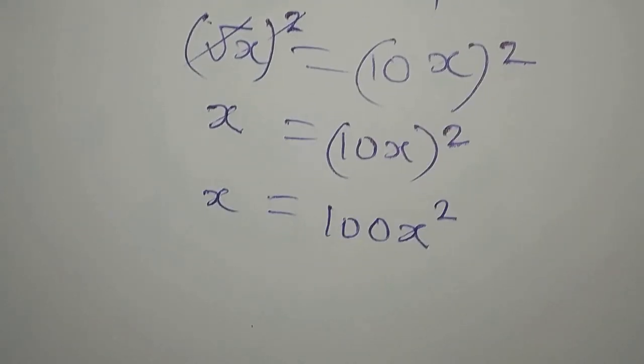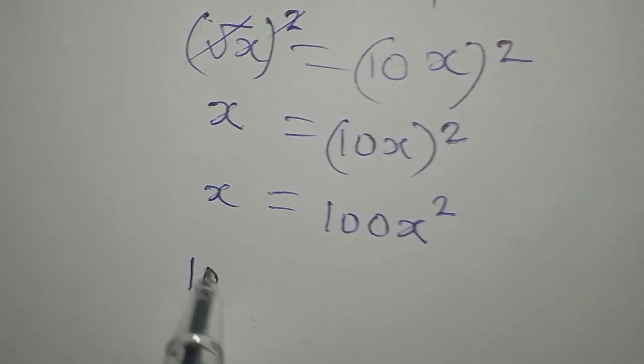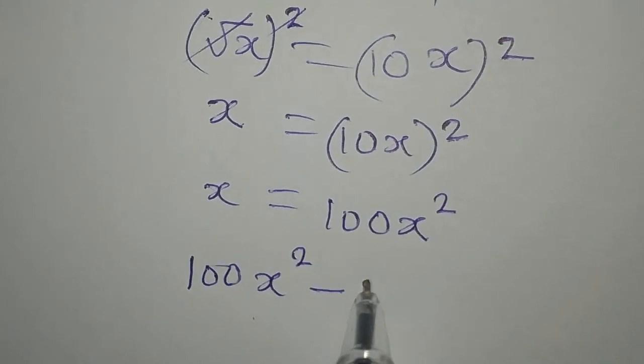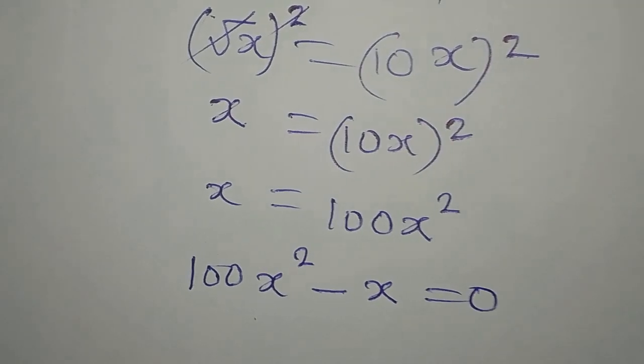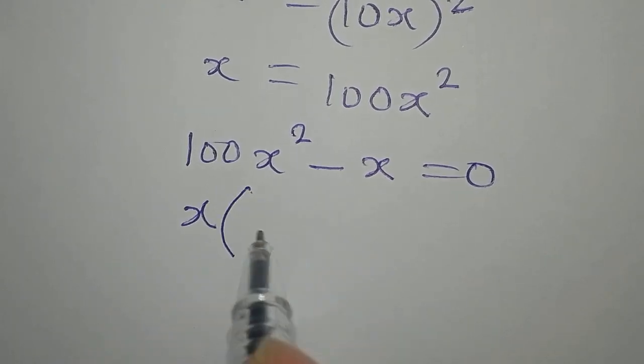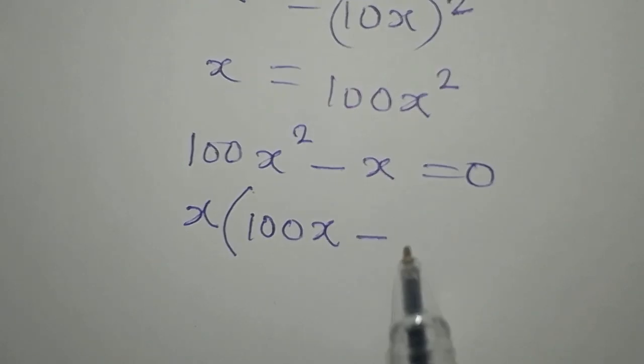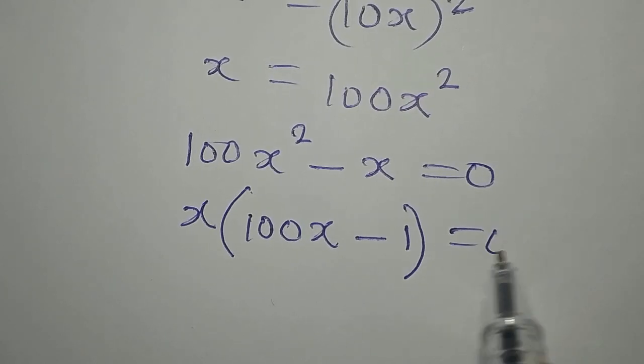Now let's write the one with the highest power first. So this is 100x squared minus x equals 0. Now what is common to them is x, here we have 100x, then minus 1, then we equate this to 0.